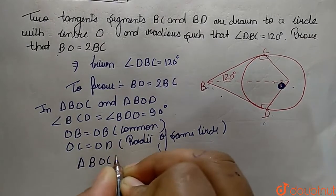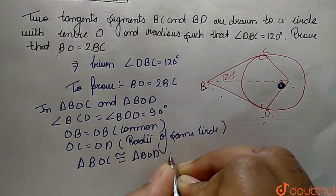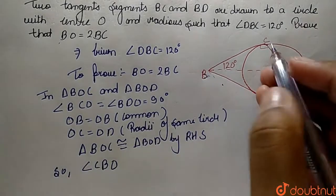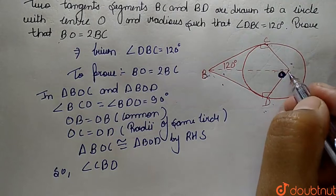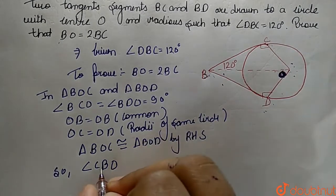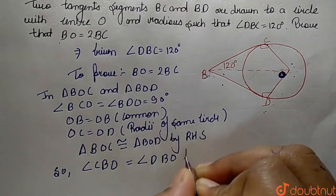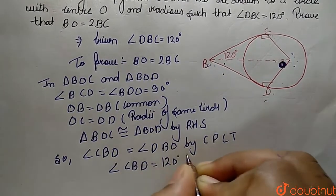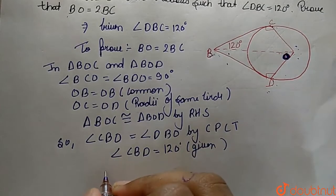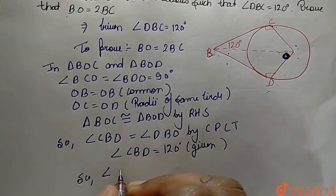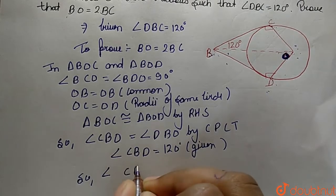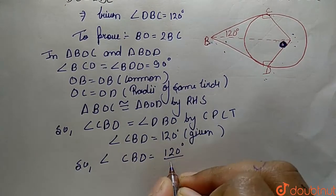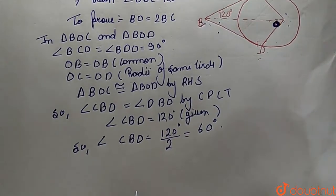By CPCT, angle CBO equals angle DBO. Since angle CBD equals 120 degrees (given), each half is 120 divided by 2, which equals 60 degrees. So angle CBO equals 60 degrees.